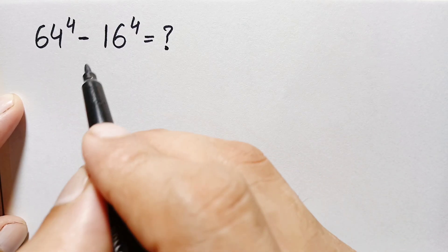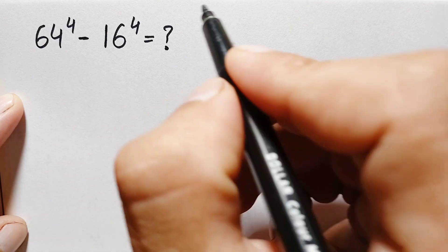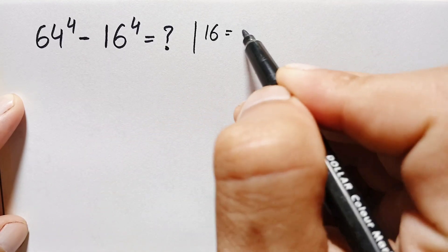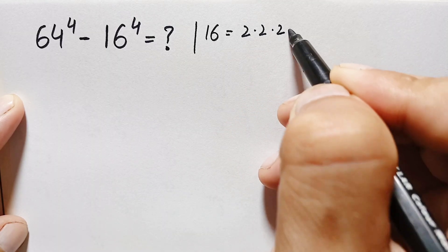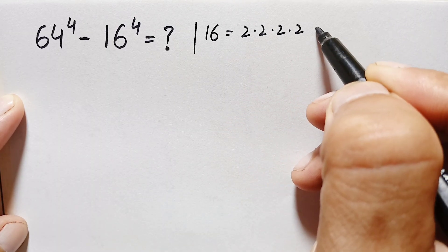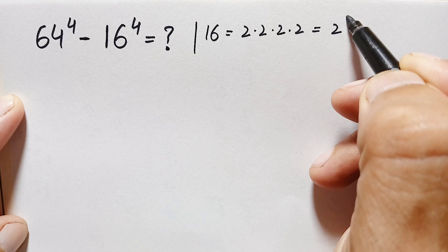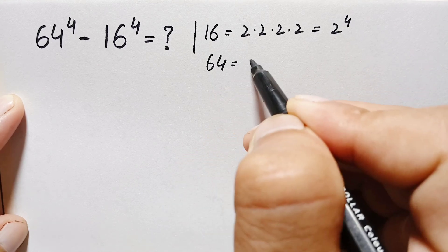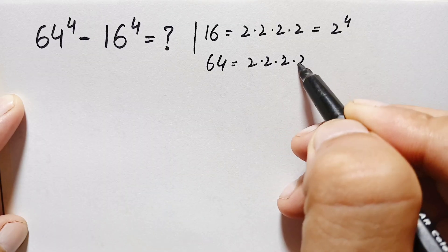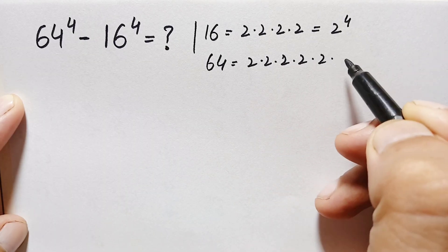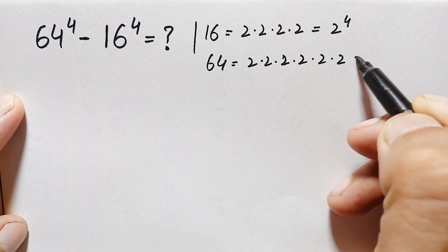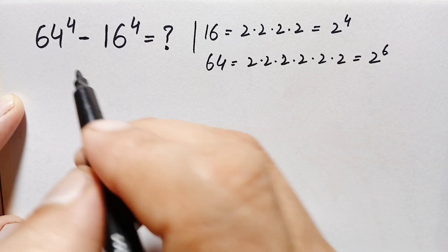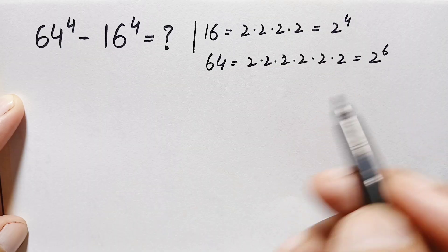First of all, we can write these two bases differently. 16 can be written as 2 times 2 is 4, 4 times 2 is 8, and 8 times 2 is 16, so 16 is 2 raised to power 4. And 64 can be written as 2 times 2 is 4, 4 times 2 is 8, 8 times 2 is 16, 16 times 2 is 32, 32 times 2 is 64 — so 2 appears 6 times, meaning 64 is 2 raised to power 6.